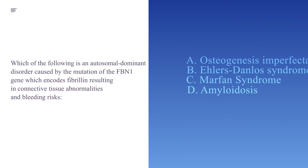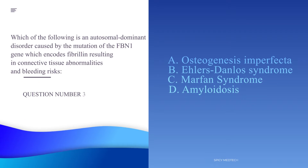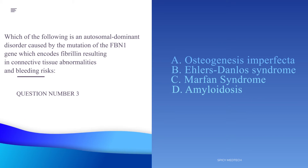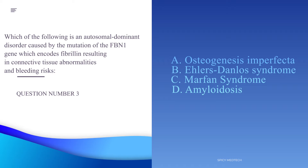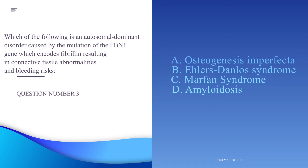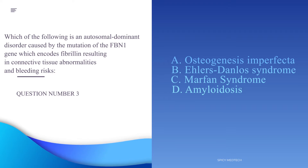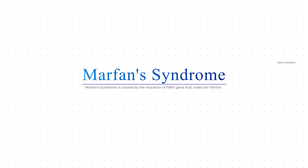Number three: Which of the following is an autosomal dominant disorder caused by the mutation of the FBN1 gene, which encodes fibrillin, resulting in connective tissue abnormalities and bleeding risks? A. Osteogenesis imperfecta, B. Ehlers-Danlos syndrome, C. Marfan syndrome, or D. Amyloidosis. The answer is letter C, Marfan syndrome.